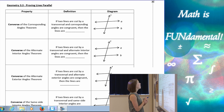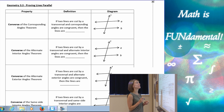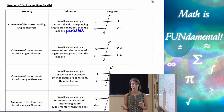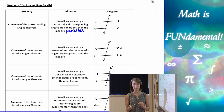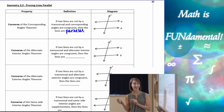Starting off, the converse of the corresponding angles theorem states that if two lines are cut by a transversal and corresponding angles are congruent — so we have to be given that piece of information — then we can conclude that the lines are parallel. In the corresponding angles theorem, we were given that lines are parallel and proving that corresponding angles were congruent. Now we're given that corresponding angles are congruent and using that to prove that the lines are parallel.